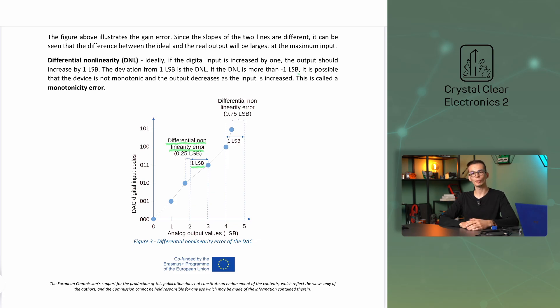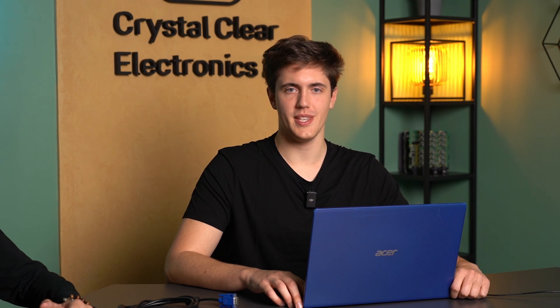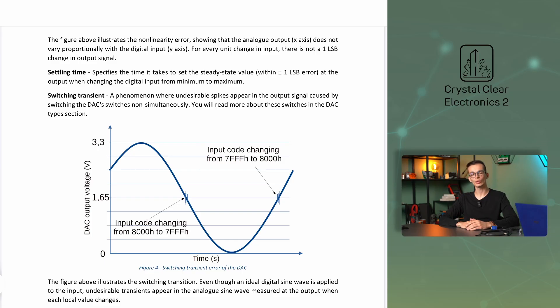In the extreme case, a monotonicity error may occur, meaning that if a higher value of a digital input code is given, the analog output value will decrease. The next parameter is the settling time, which specifies the time it takes to set the steady-state value within plus or minus one LSB error at the output when changing the digital input from minimum to maximum. We can also talk about the switching transient: when the input value is changed, undesirable spikes appear in the output signal caused by switching the DAC switches non-simultaneously. We will talk more about these switches in the DAC types chapter.